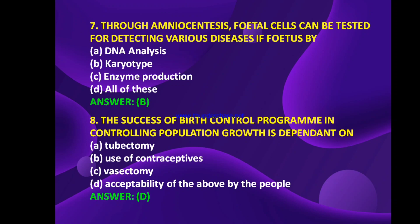The success of a birth control program in controlling population growth is dependent on tubectomy, use of contraceptives, vasectomy, or acceptability of the above by the people. The answer is D — all of the above: tubectomy, use of contraceptives, and vasectomy are the factors for the success of a birth control program.